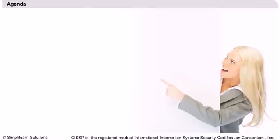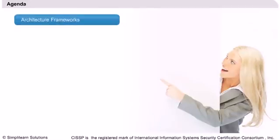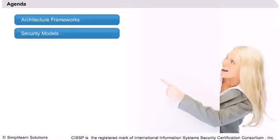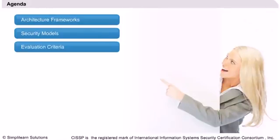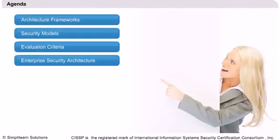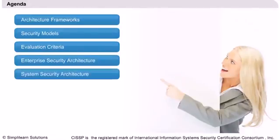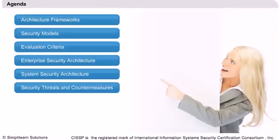Before we begin, I will briefly introduce the topics covered in this lesson. We will start with the introduction to architectural frameworks, followed by security models, then information classification — which helps determine the level of protection required for a given data set. Next on the agenda will be evaluation criteria, followed by enterprise security architecture and the concept of system security architecture. Finally, we will discuss common security threats and countermeasures.